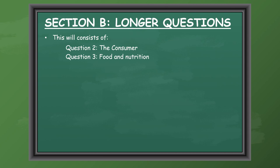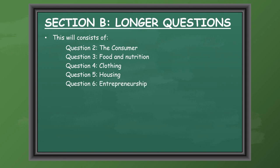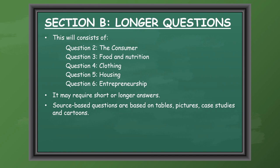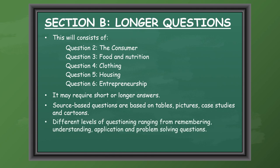Section B will be your longer questions and this will consist of Question 2, which is the consumer question; Question 3, food and nutrition; Question 4, clothing; Question 5, housing; and Question 6, entrepreneurship. All of these will require short or longer answers. There will be source-based questions based on tables, pictures, case studies and cartoons. All questions will have different levels of questioning ranging from remembering, understanding, application, and problem solving.